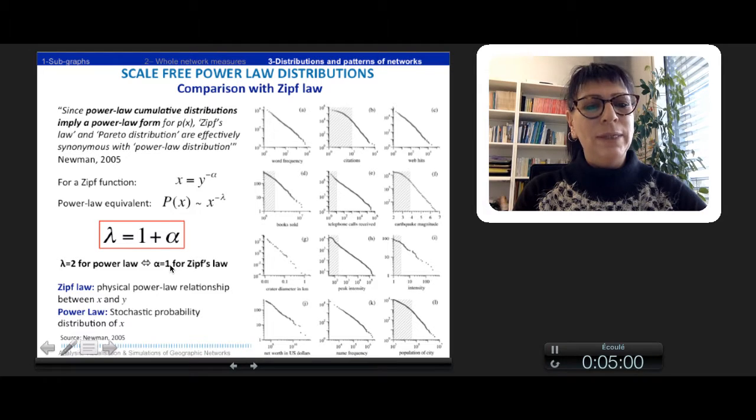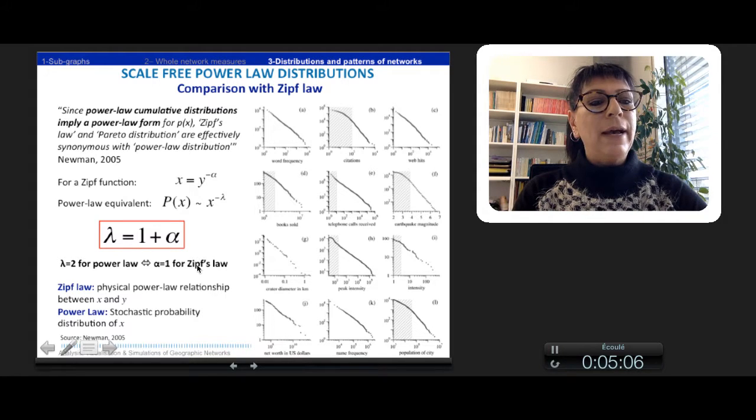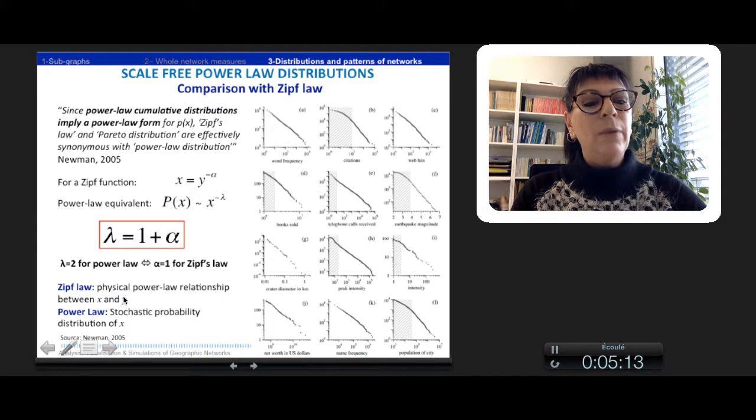But the power-law is a stochastic probability distribution of only x, which is the difference between both.